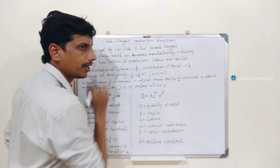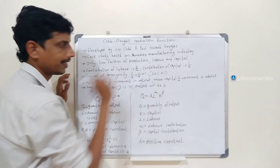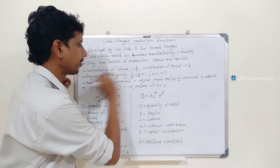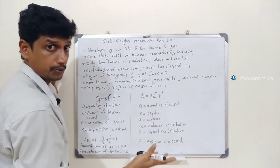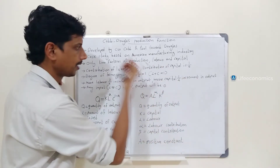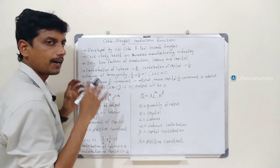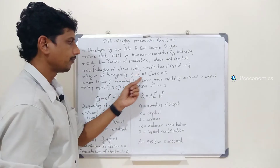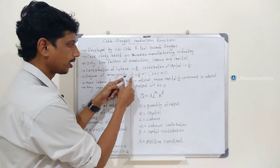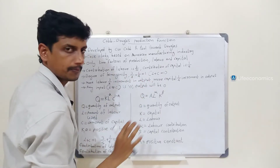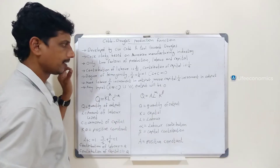The contribution of labor is 3/4 and the contribution of capital is 1/4. The degree of homogeneity is the ratio: 3/4 plus 1/4 equals 1. So 3/4 is the contribution of labor and 1/4 is the contribution of capital, and together they equal 1.